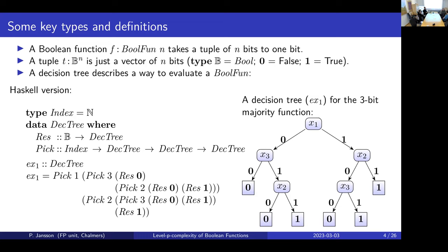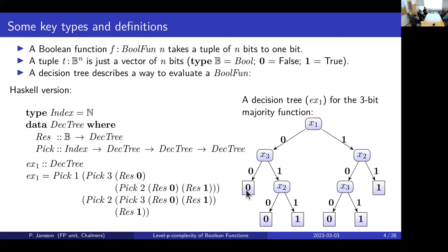With five input bits, there were only 54,000 possible decision trees for that function. The constant function returning true only has one decision tree — the leaf returning true. So we will get to the exact definitions. A boolean function f takes n bits to one bit, and a tuple is just a vector of n bits. A decision tree can be represented by a Haskell data type: either a leaf storing the boolean result, or a node that picks an index and has two subtrees.